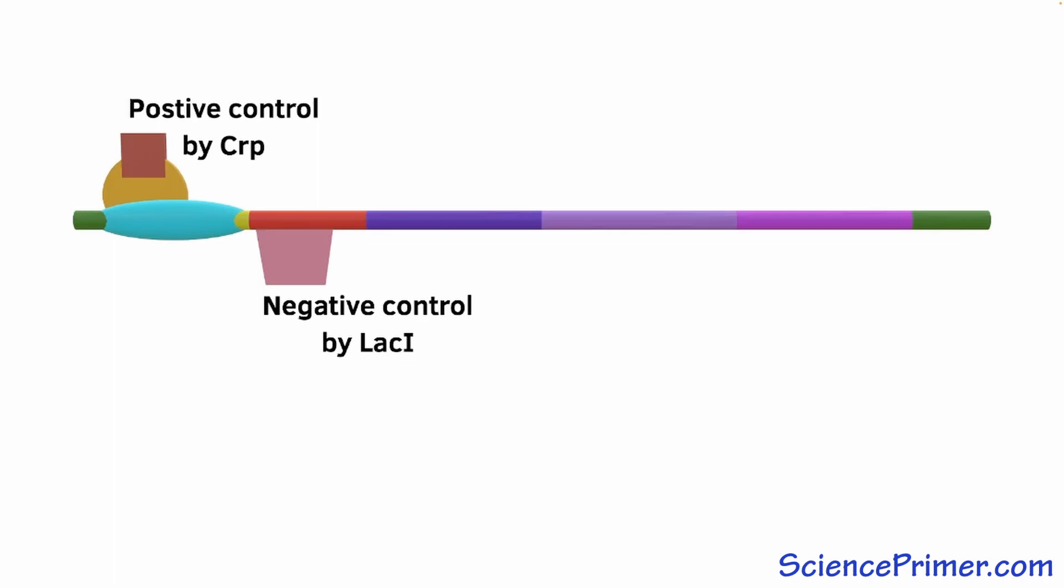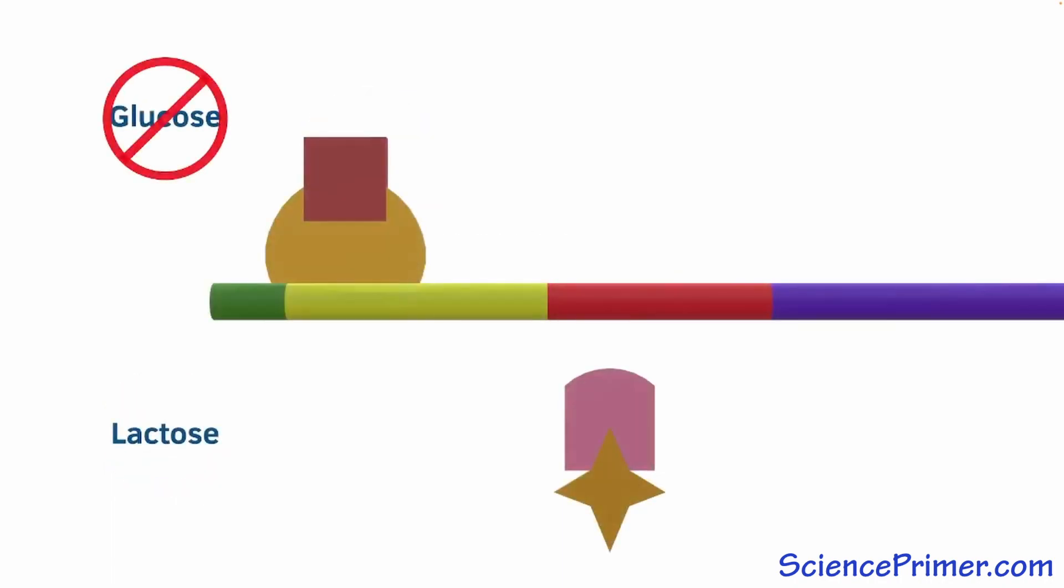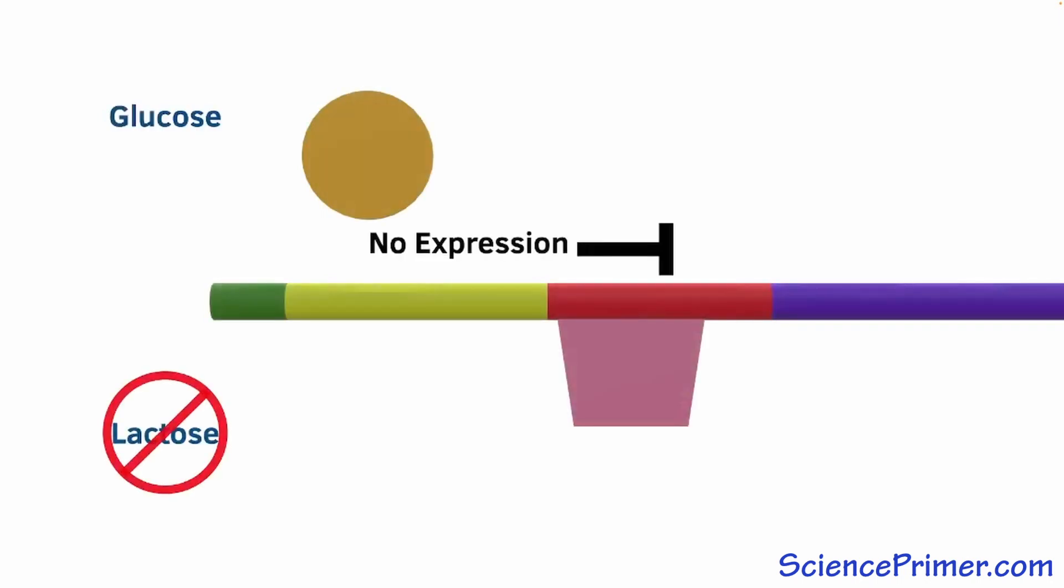Under normal conditions where glucose is present and lactose is not, lac I is bound to the operator, CRP is inactive, and the operon is not expressed. Only when glucose is absent and lactose is present will the conformation of both of these regulators result in the expression of the operon and the production of the enzymes needed to metabolize lactose, because either the presence of glucose or the absence of lactose will prevent expression of the operon.